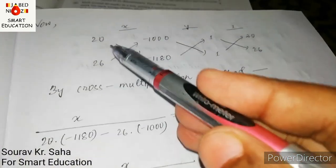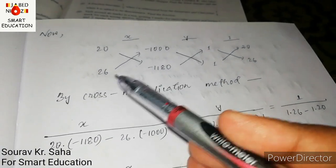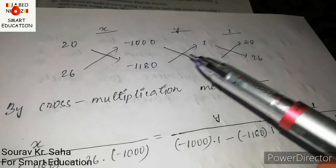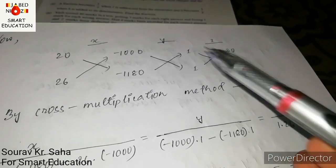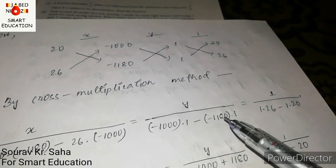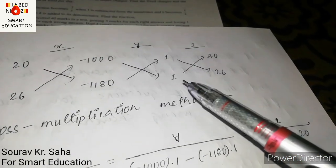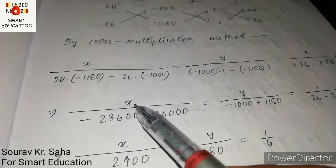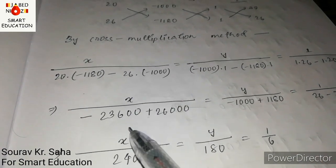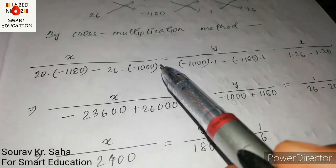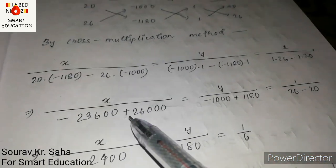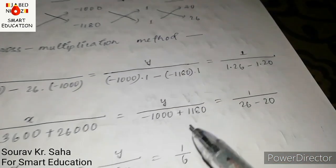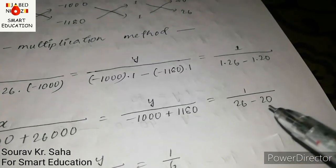By cross multiplication: x by (20 × −1180 − 26 × −1000), y by (−1000 × 1 − (−1180) × 1), and 1 by (1 × 26 − 1 × 20). Calculating: x by (−23600 + 26000) = x by 2400; y by (−1000 + 1180) = y by 180; and the denominator 1 by (26 − 20) = 1 by 6.